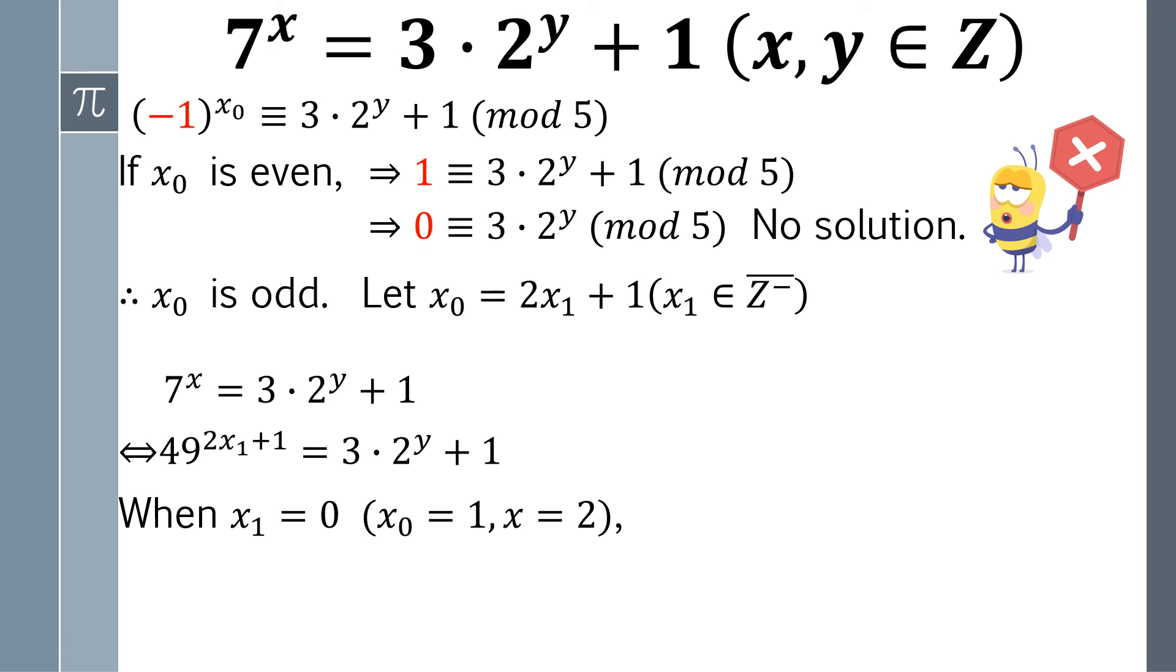If x1 is 0, then we can get 49 equals 3 times 2 to the y power plus 1, which leads to the conclusion that y equals 4. And also, x1 equals 0 means x0 equals 1 and x equals 2. From here, we are able to find the second solution, which is 2 and 4.